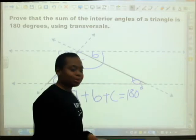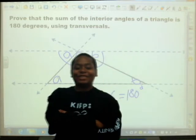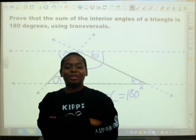Therefore, this proves that the sum of all interior angles of a triangle is equal to 180 degrees.